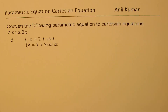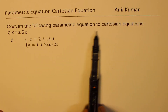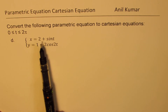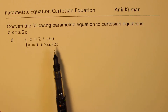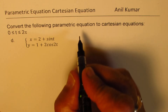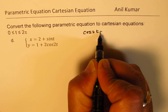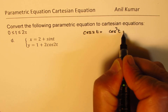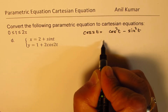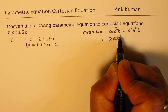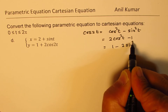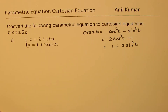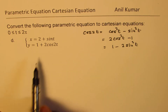Let's take the last example: convert the parametric equation to Cartesian. We are given x = 2 + sin(t) and y = 1 + 2cos(2t). For this, we'll use the double angle formula for cosine: cos(2t) = cos²t − sin²t, which can also be written as 2cos²t − 1, or 1 − 2sin²t. One of these will be utilized.